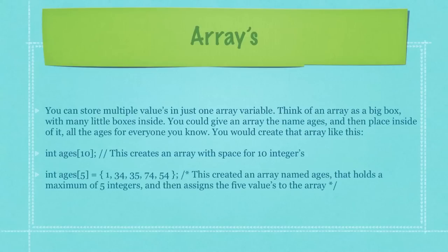You can store multiple values in just one array variable. Think of an array as a big box, like I said before, with a whole bunch of little boxes in it. For example, you could give an array the name ages and then place inside of it all the ages for everybody that you know. You would create that specific array below if you only knew 10 people. And then in the next example, you can see here that I'm creating an array named ages that holds the maximum number of five integers and then assigns those five values to this array.